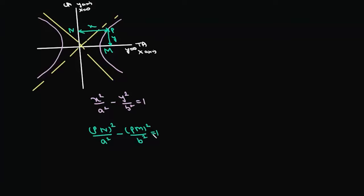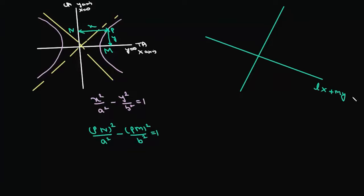Using this form, we want to find the equation of hyperbolas for which the transverse and conjugate axes are perpendicular, but they are not the x-axis and y-axis — they are some arbitrary perpendicular lines. For example, suppose the two perpendicular lines have equations lx + my + n = 0 and mx - ly + n' = 0, and their point of intersection is at some point (h, k), not at the origin.